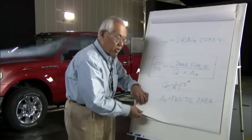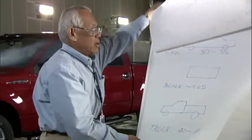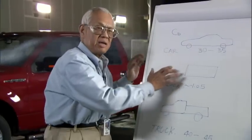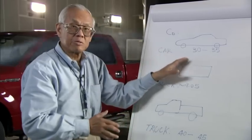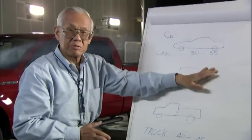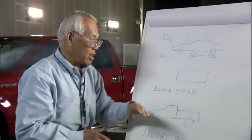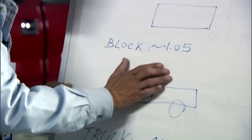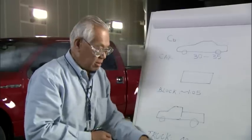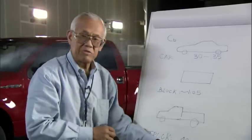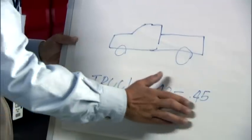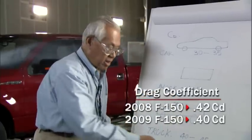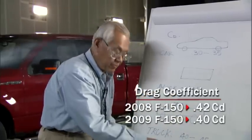In a typical vehicle these days, on a passenger car you can see a typical C-D of 0.3 to 0.35. Consider a block — it's about 1.05. For a truck, it mostly ranges from 0.40 to 0.45. In this case, our vehicle is coming in at the low end: 0.40.